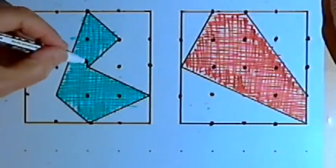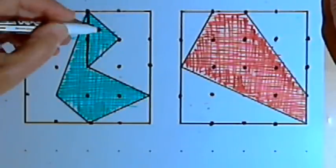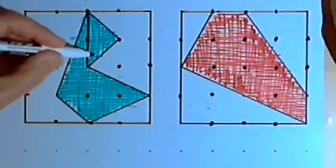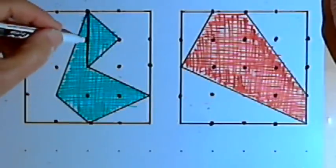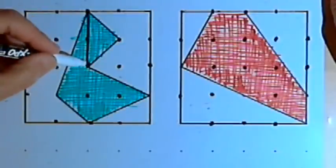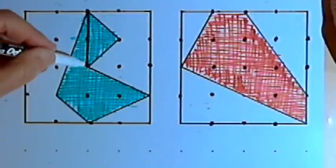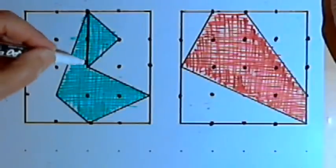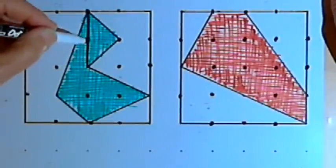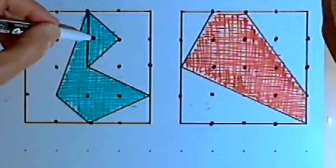For instance, I can draw a line here and I've created a triangle. Using these dots as 1-inch measures, I can figure out that if this were to be the base of the triangle, the triangle would have a base of 2 (1-2), and its height, going this way, would be 1.